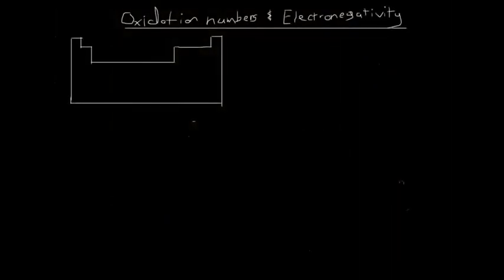We're going to have a talk about oxidation numbers and electronegativity. First we're going to look at a basic molecular structure - water. We've got oxygen there, two hydrogens. Because this is a molecular compound, this line here represents a covalent bond.